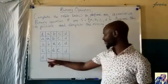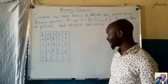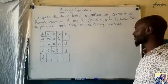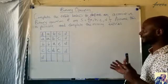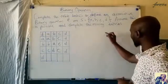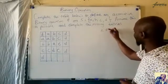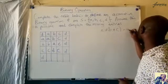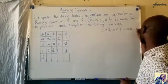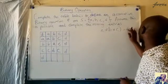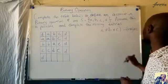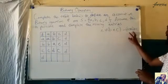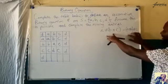When we look at this table, we have these missing entries that we have to fill in using an associative binary operation. When we say associative, we mean the order in which you can group things. So if I have A operate B operate C, I can group the last two first, or I can group the first two first — and the answer I get should be the same. Both groupings should give the same result.